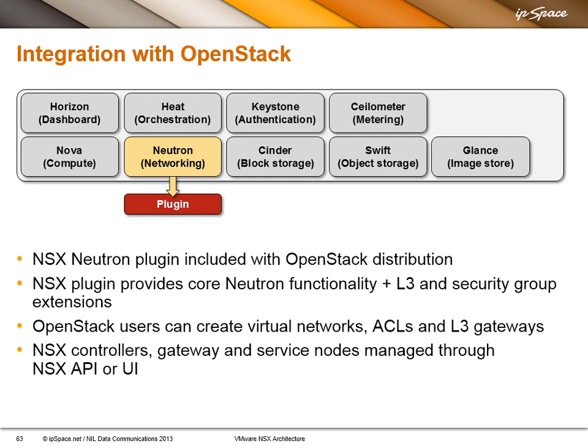So you can create virtual networks, access control lists, and layer 3 gateways. You can manage most things through OpenStack, but a few things — like configuring the controller, adding gateway and service nodes — because they are not an OpenStack construct, you have to manage them through the NSX API or user interface.